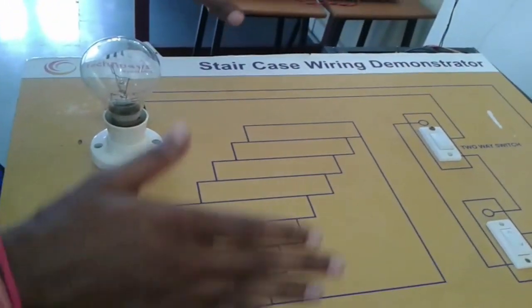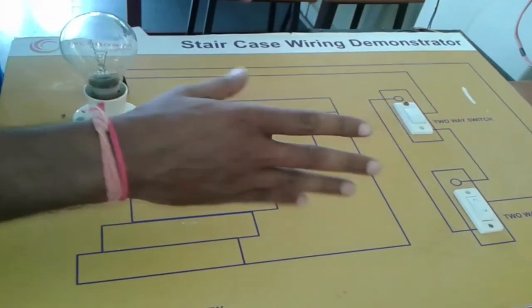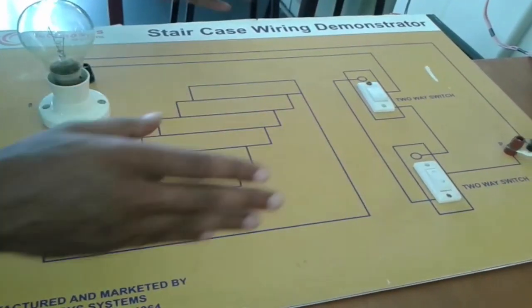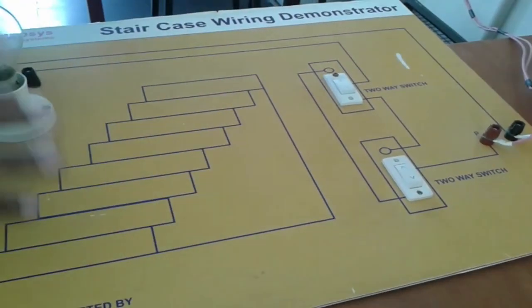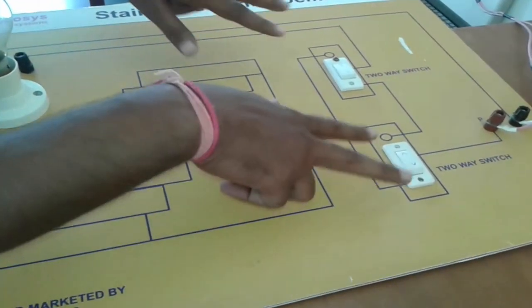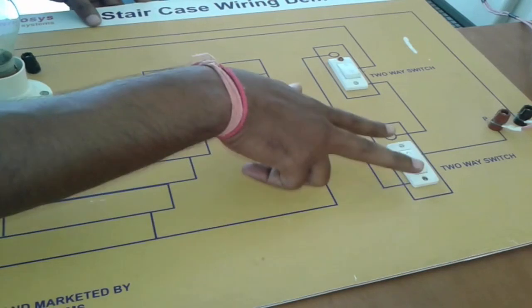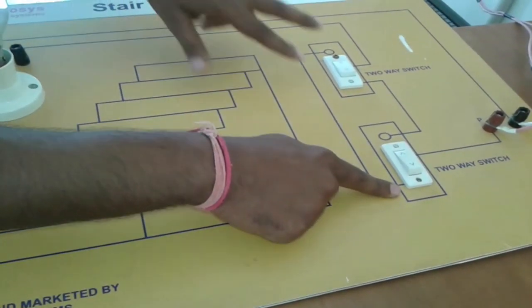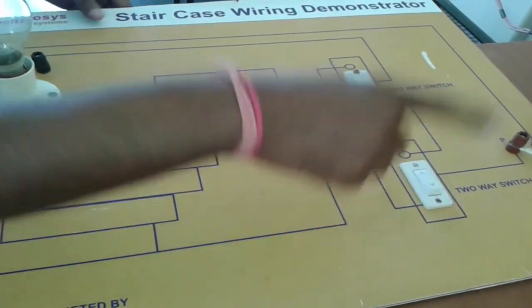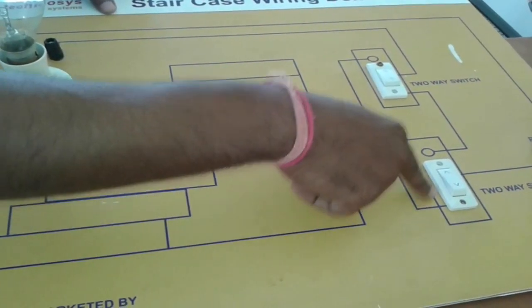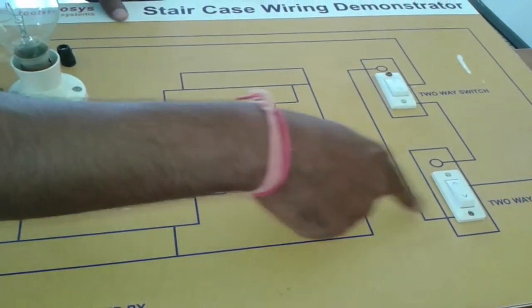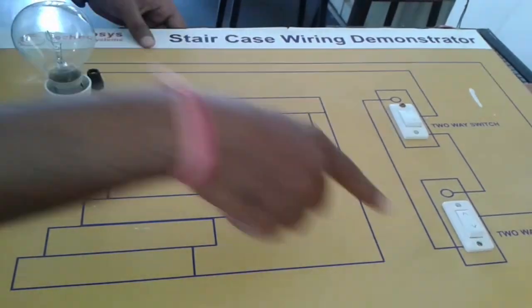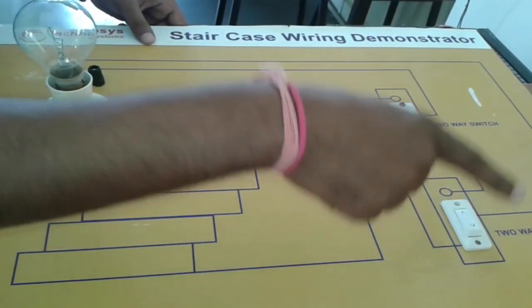As we have already showed you the connections, the connections are not very complicated, it is very simple. And now we will discuss about the motive of using this type of circuit. There is a building in which there are two floors, first floor and the second floor. The first switch is in the first floor and the next switch is in the second floor. So with the help of this, with the help of this type of three pin switches, we can switch on and off, we can control this bulb from both the floors.